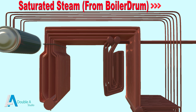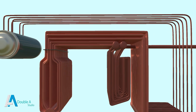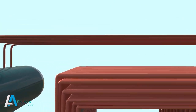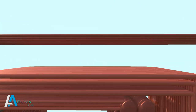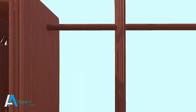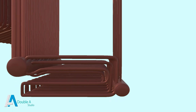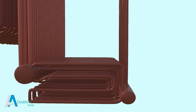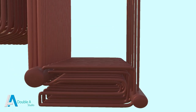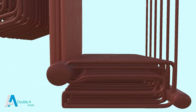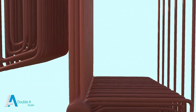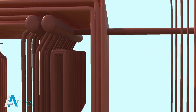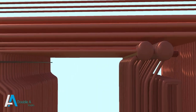The saturated steam that comes out of the boiler drum is passed through various superheaters. These are a set of tubes placed in the path of flue gases where saturated steam is further heated by the hot flue gases and gets converted into superheated steam.